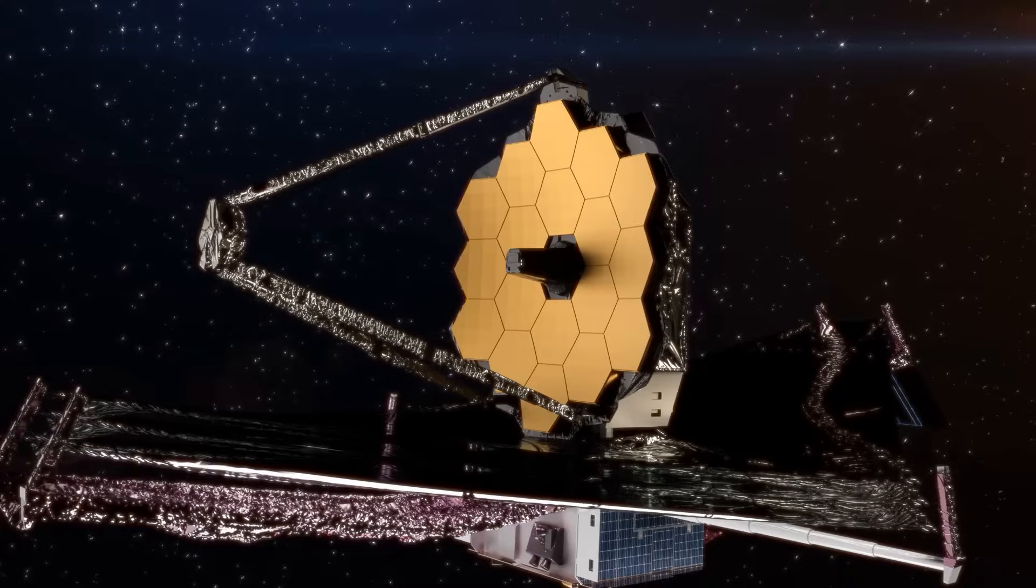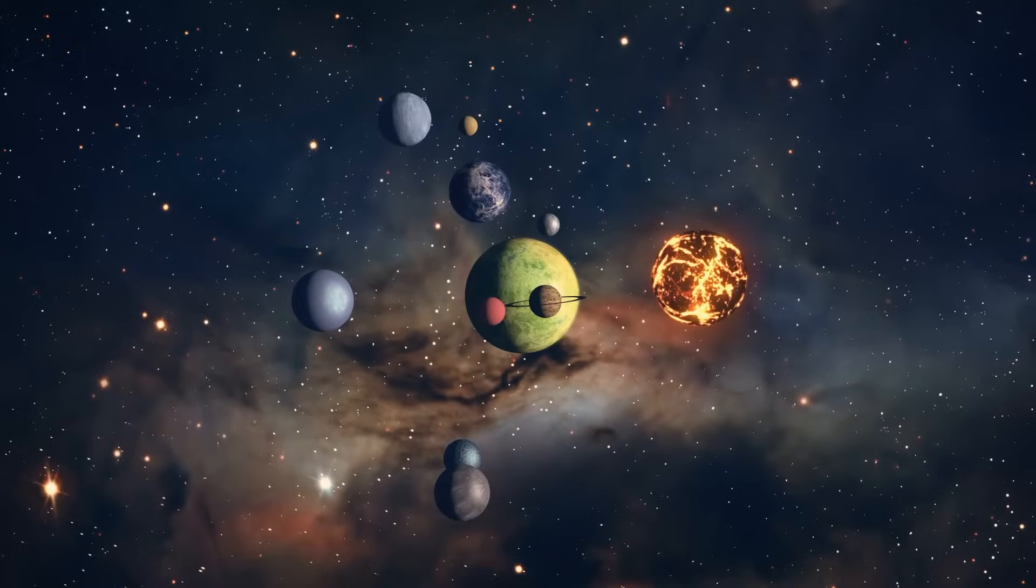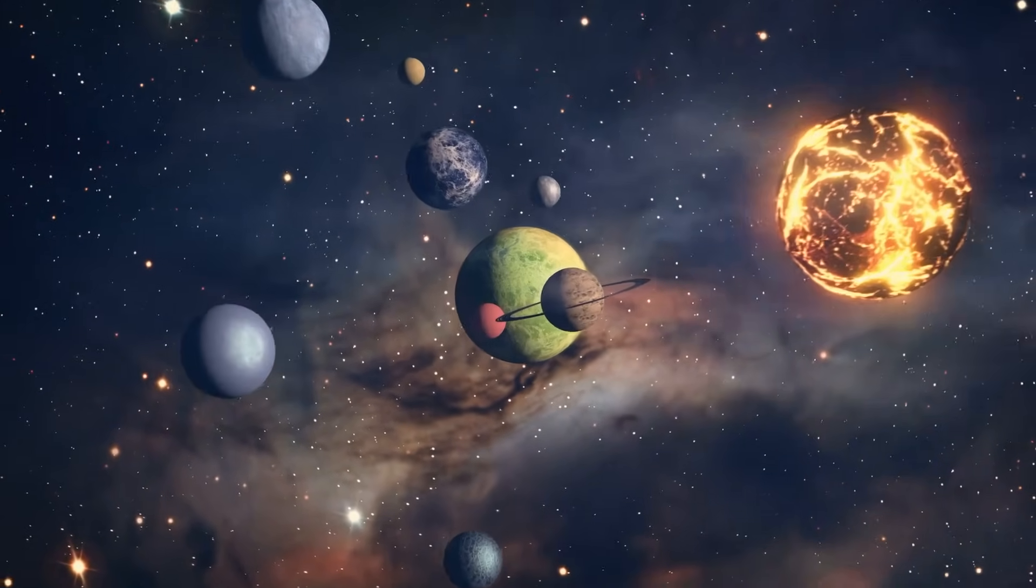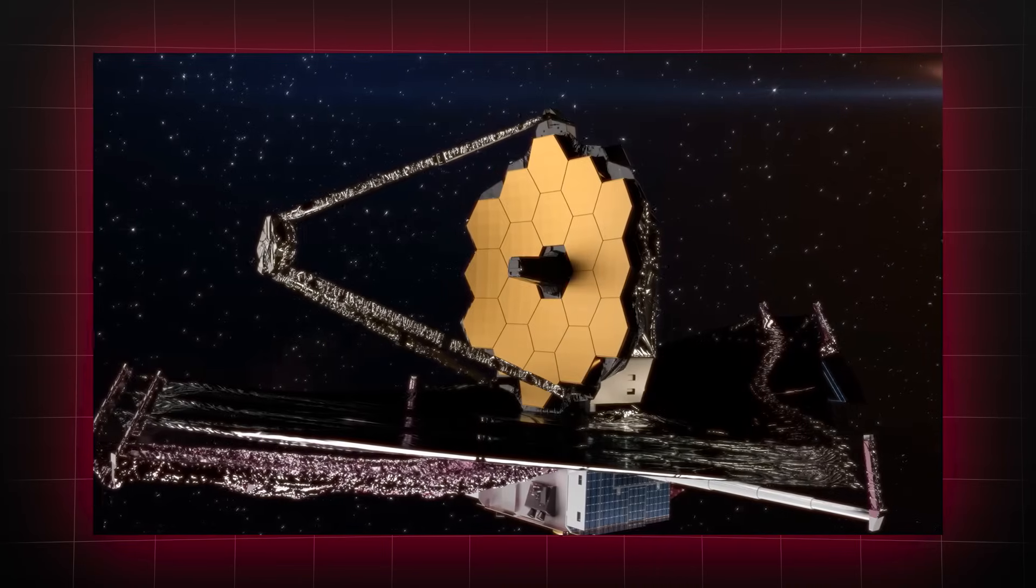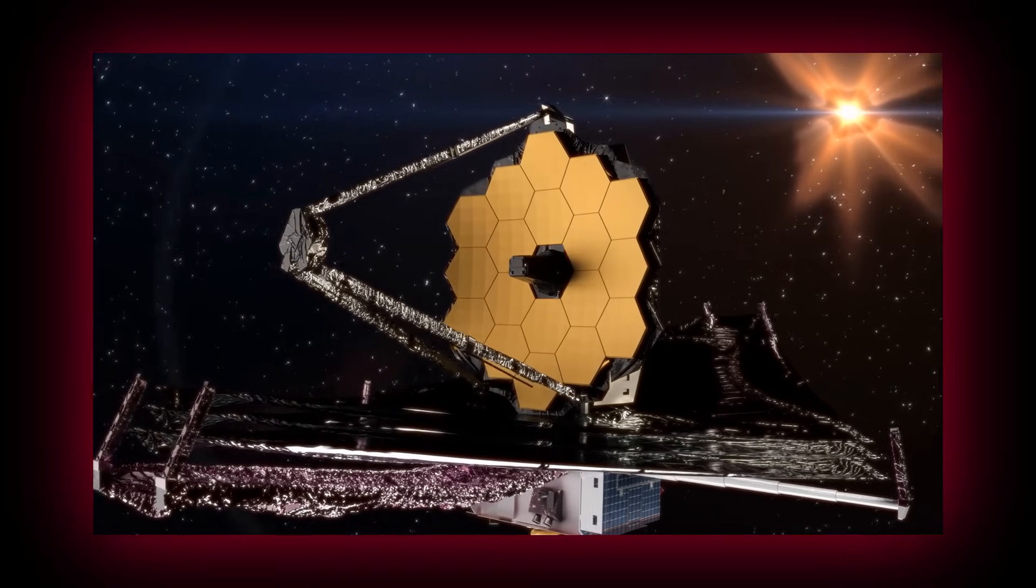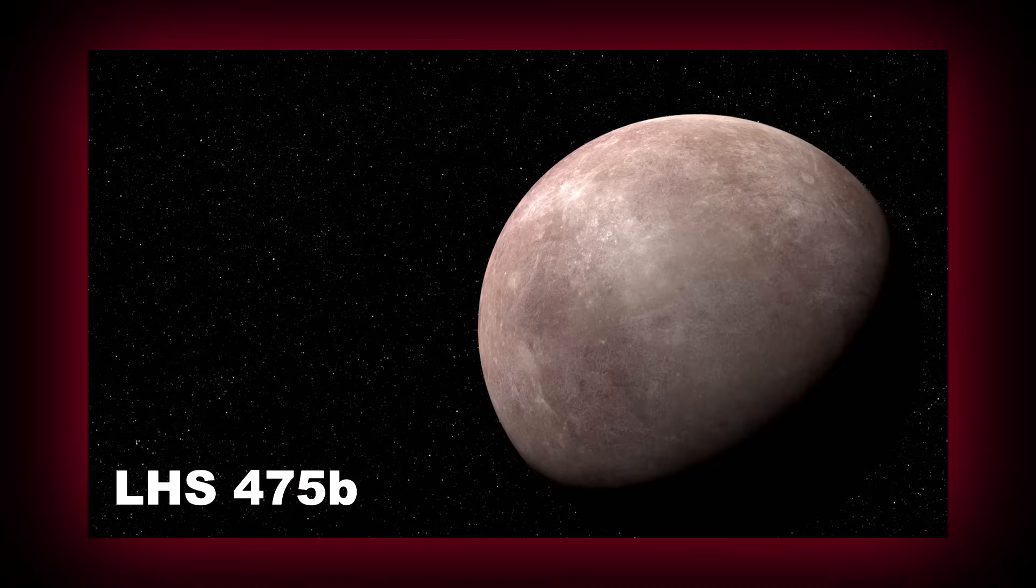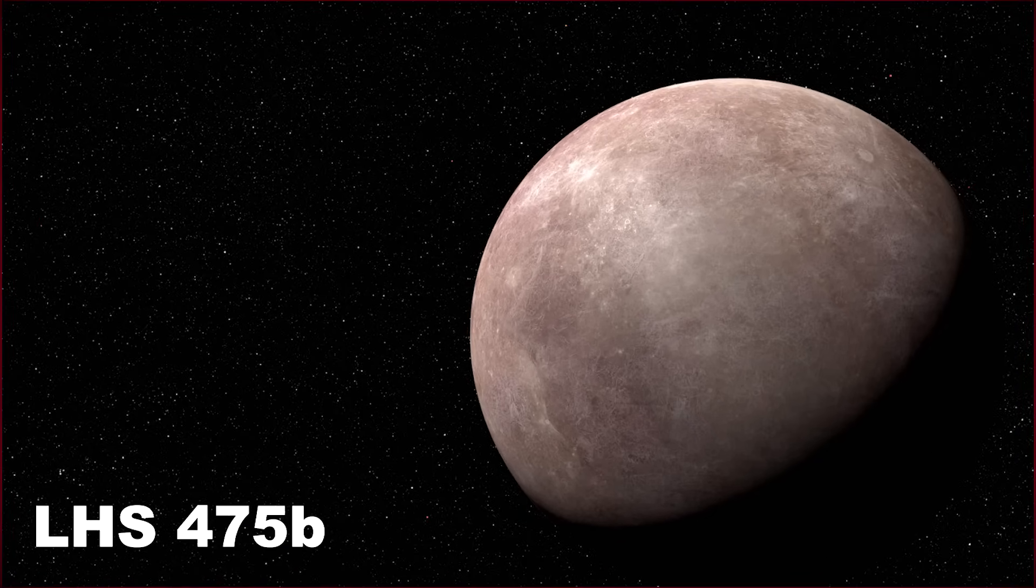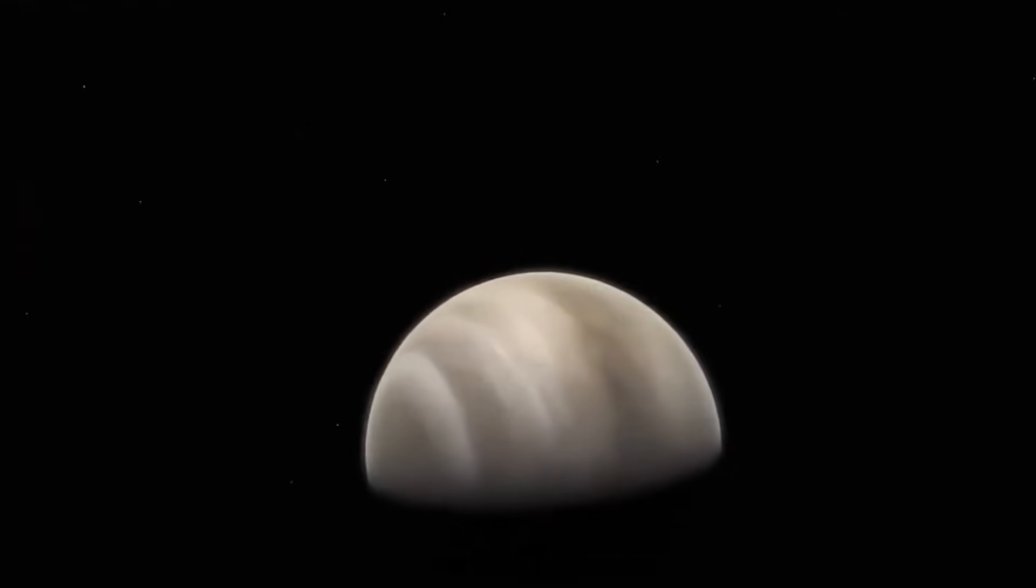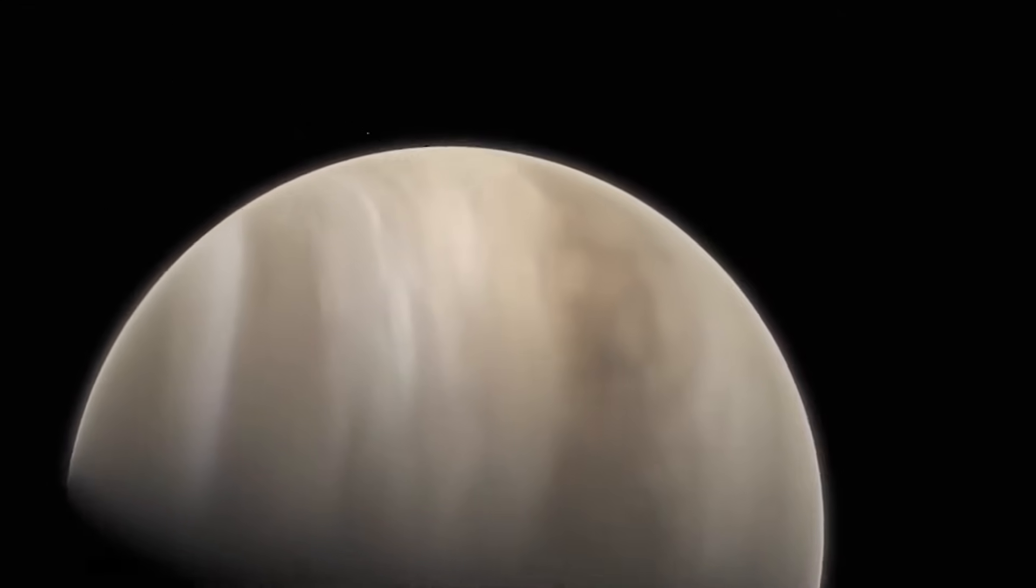The space telescope has also contributed to enhancing our understanding of exoplanets, worlds that orbit stars other than our Sun. James Webb has proven particularly adept at observing distant large galaxies, so much so that it identified its first exoplanet, LHS 475b, in the early months of 2023. This planet, located 41 light-years away, has a diameter similar to that of Earth.